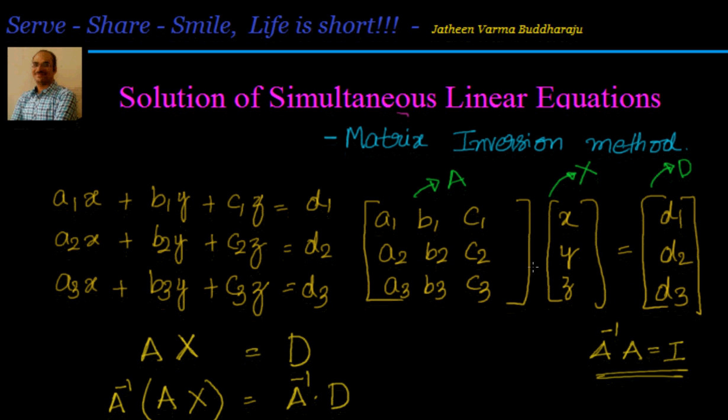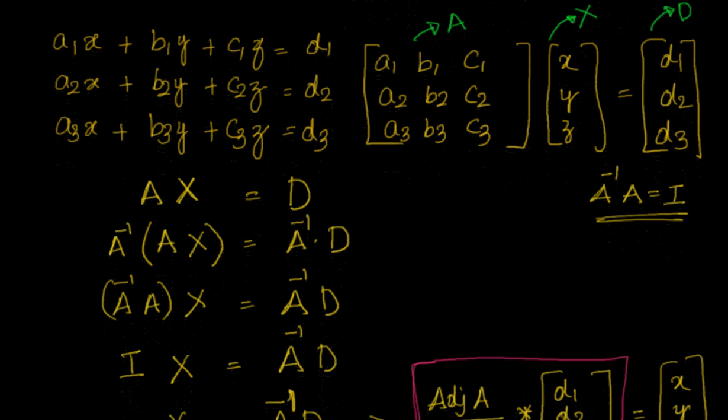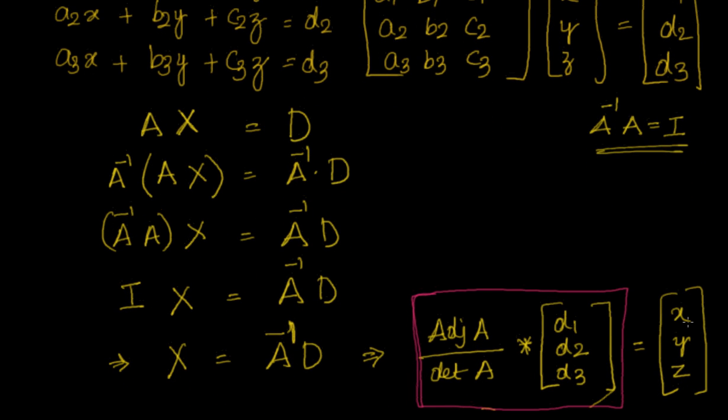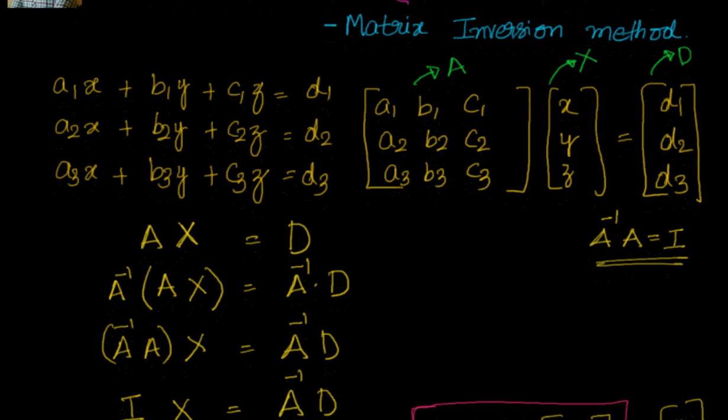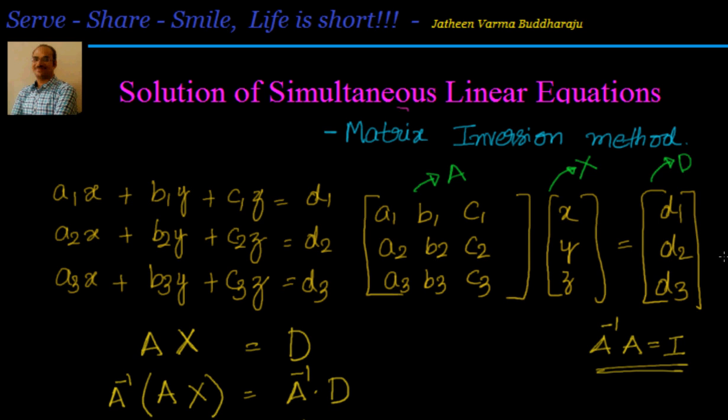So what I have to do? If they have given me 3 equations, I will form from the coefficients the matrix A and from the constants I will get capital D. Then I will simply say X, Y, Z or X matrix is nothing but equal to A inverse, that is adjoint A by dot A into D1, D2, D3. So we will leverage this formula and solve some simple examples in the next session.